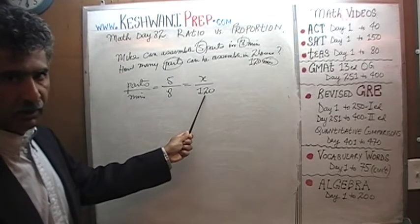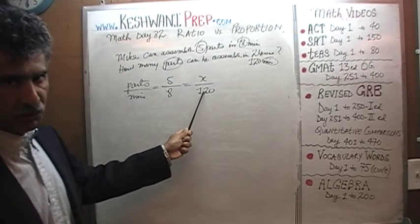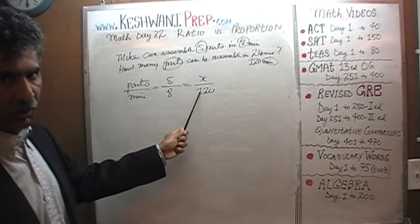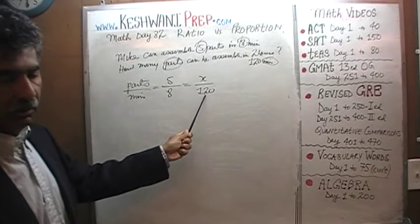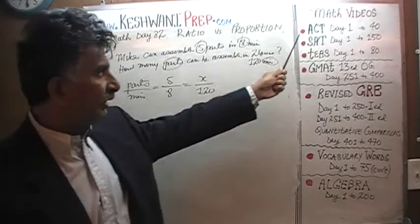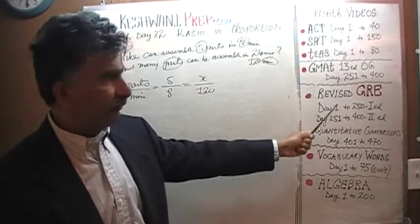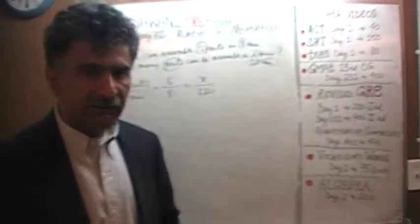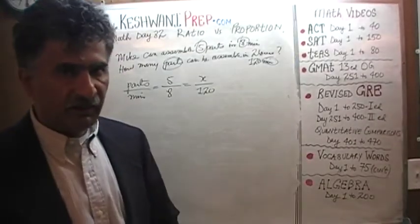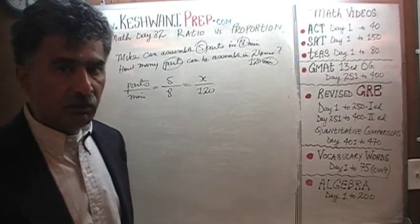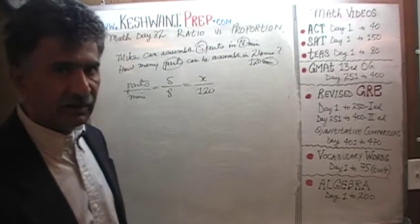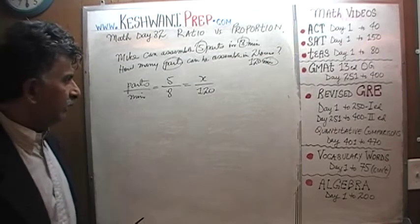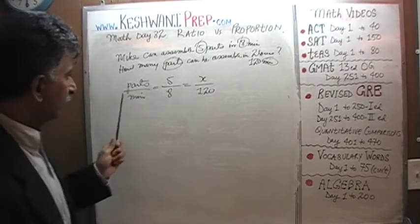If you end up putting two here, one of the answer choices given to you will match your answer based on having a two. Because we're preparing for one of these exams — ACT, SAT, GMAT, GRE. These are all multiple choice exams. They will give you one answer choice which will look exactly like the answer you come up with if you use two instead of 120. So let's solve for it.